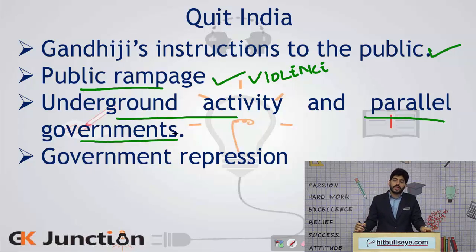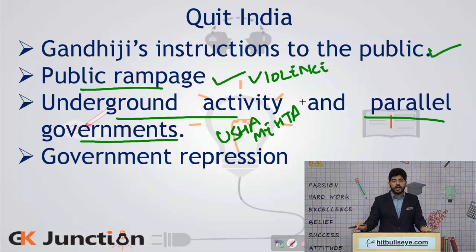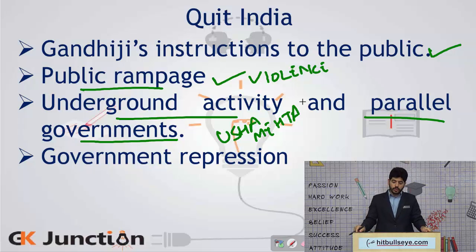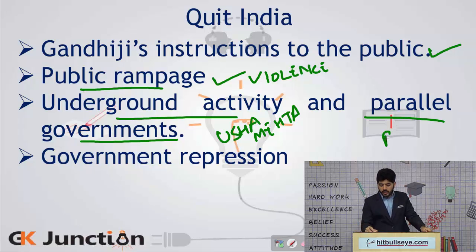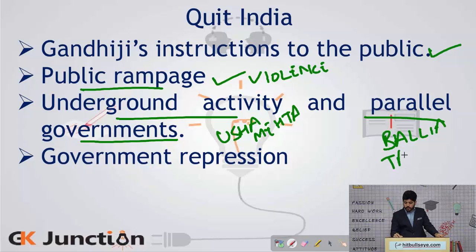More important were underground activity and parallel governments. Various personalities such as Usha Mehta indulged in underground activities, including starting radio communications and providing instructions to volunteers on how to go forward in the Quit India Movement. Parallel governments involved creating a parallel system of administration by the people themselves. Three such parallel governments were set up: in Ballia, in Tamluk, and in Talcher — in complete disobedience of British rule.